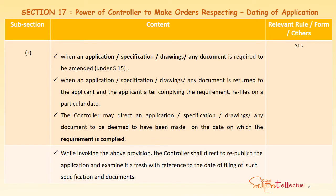Section 17 Subsection 2: When any application, specification, drawing, or related document is required to be amended — whether due to an objection, a voluntary change, or when it is returned to the applicant — and the applicant complies with the requirement and refiles on a particular date, then the controller may direct that the application, specification, drawing, or document shall be deemed to have been made on the date on which it was refiled or the requirement was complied with. The controller shall also direct republication of the application and examine it as a fresh application with reference to the date of filing of the specification and documents.